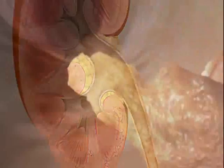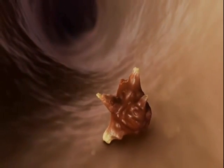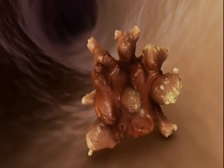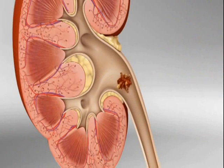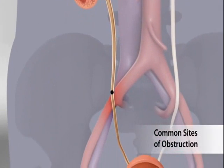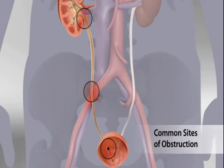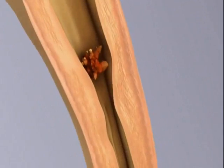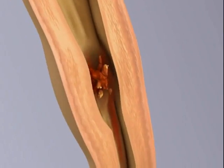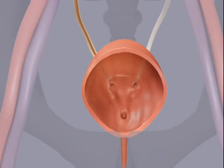If a stone continues to grow until it reaches a critical size — which can be as small as four to five millimeters in diameter — it may be too large to pass easily through the ureter. The edges of the stone may become wedged inside the ureter at the ureteropelvic junction, where the ureter crosses over the iliac artery, or at the ureterovesical junction. The result is pain and obstruction until the stone slowly passes into the bladder and eventually passes out of the body in the urine stream.